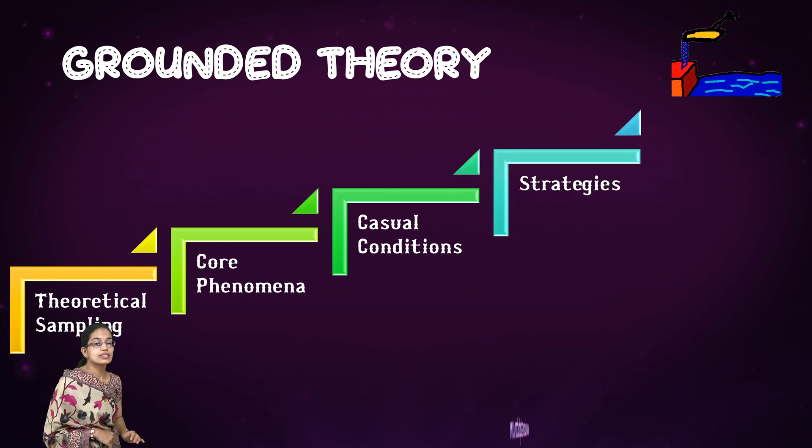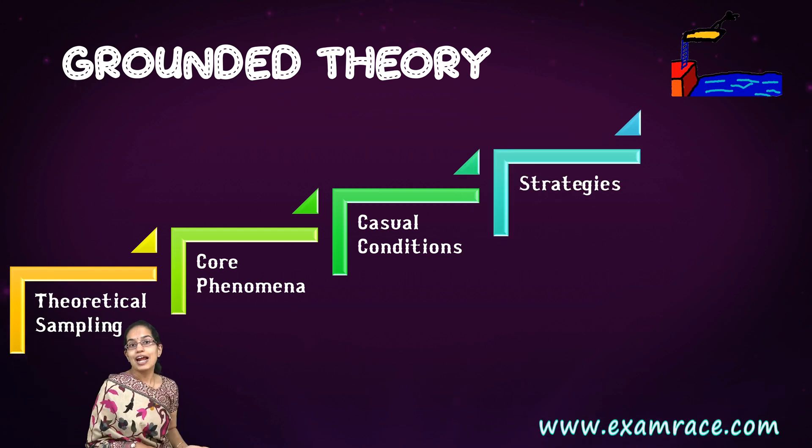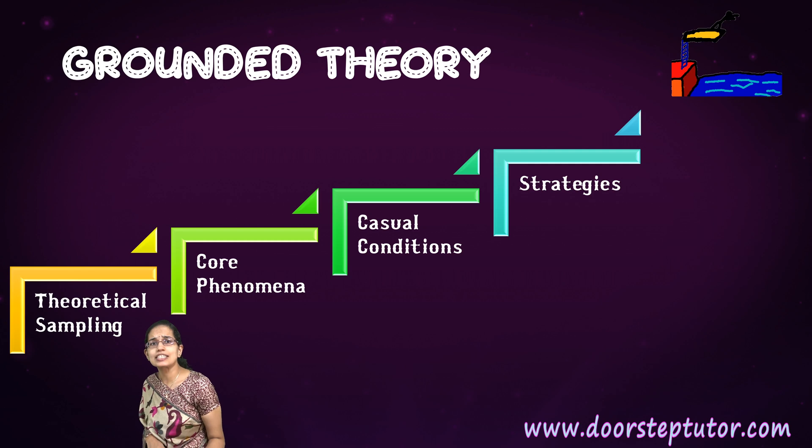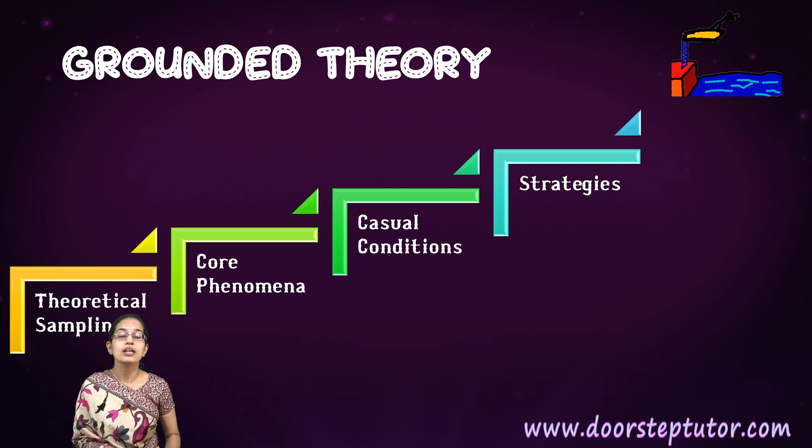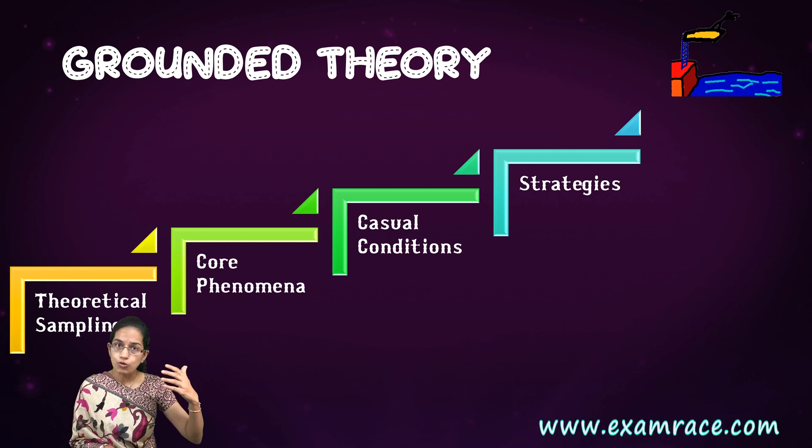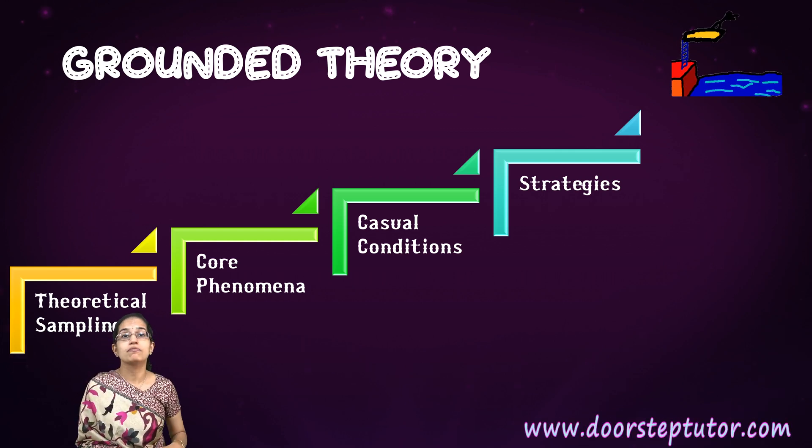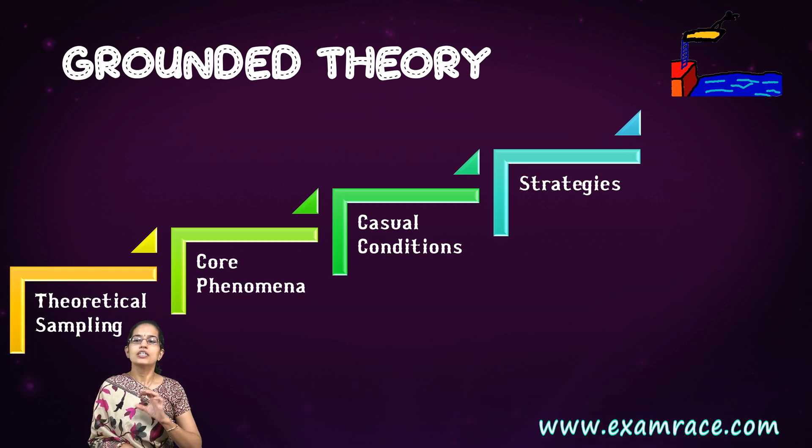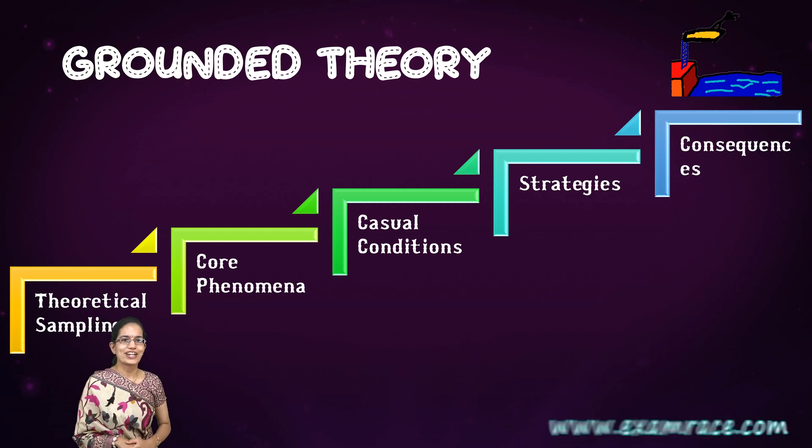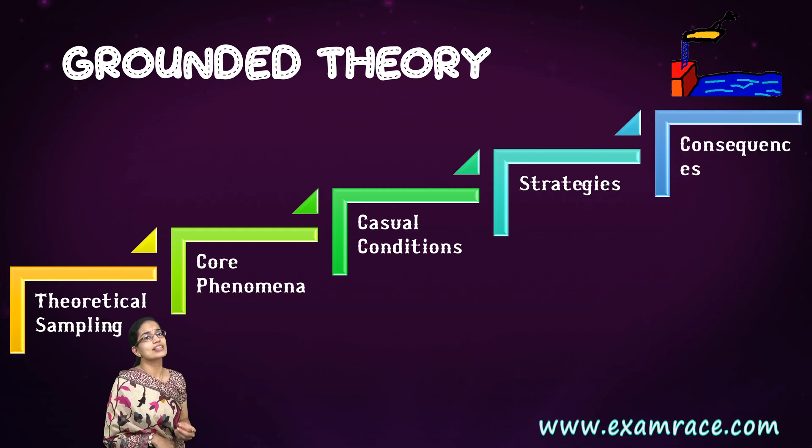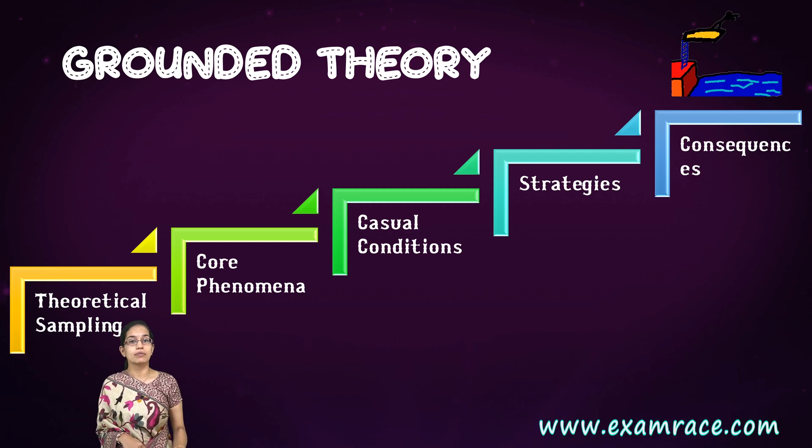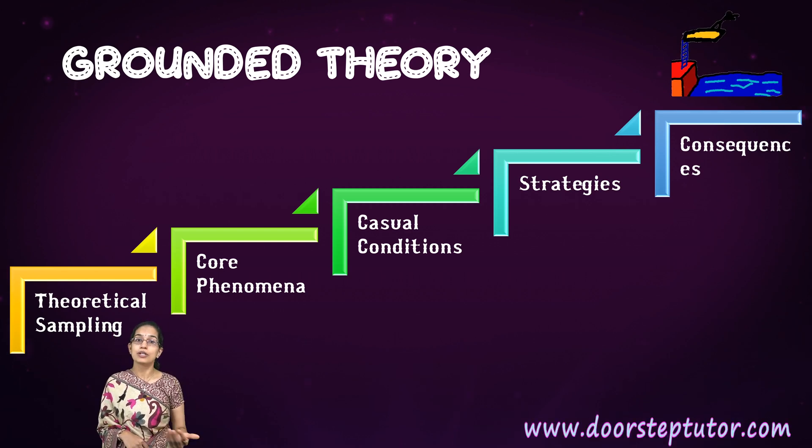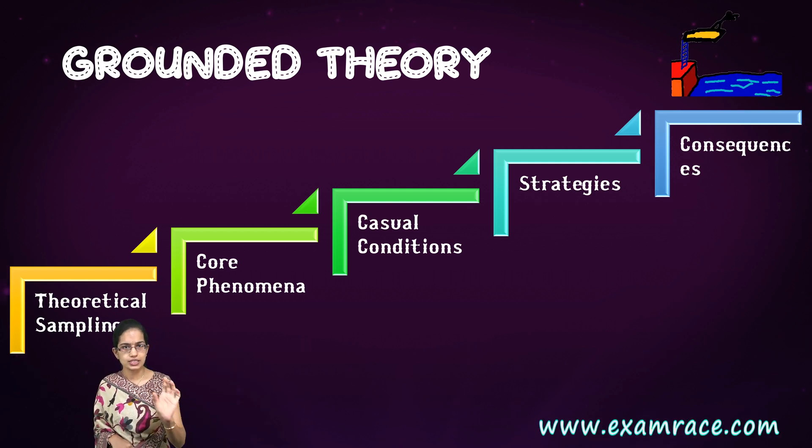The next important thing is the strategy. Strategy says what was the action that you actually adopted, what was the process? How long did you study, what hours, which topics did you emphasize? That is strategy. Finally, you would focus on the consequences and outcomes of those strategies. How well you were able to score, which subjects you scored higher in. That's the outcome of the strategy.